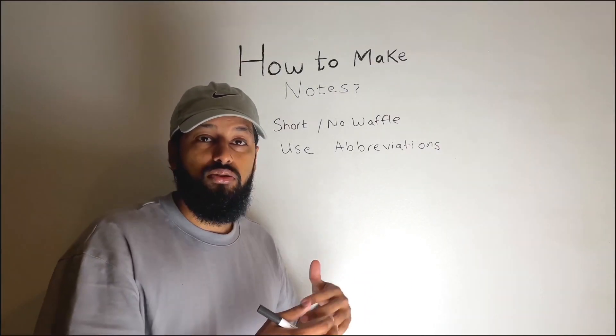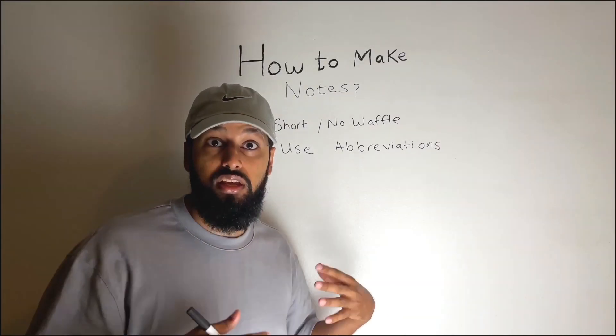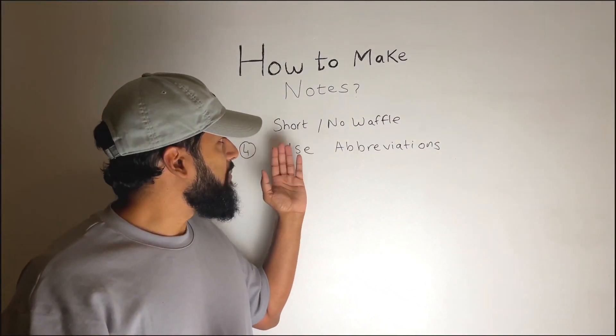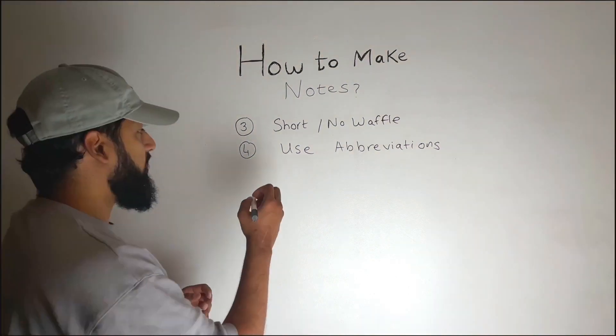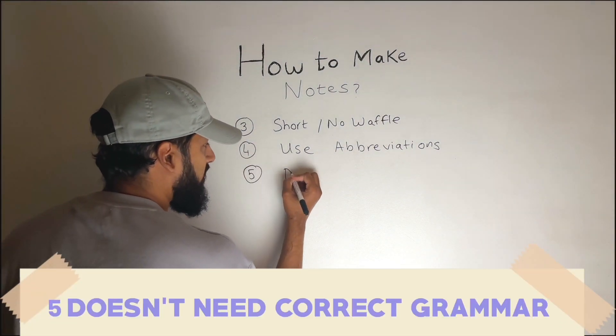Now for something like GCSE maths you can condense all of your GCSE maths in about 10 sites really. It really pays to keep it short. Use abbreviations where possible and it doesn't need to be correct grammar either.